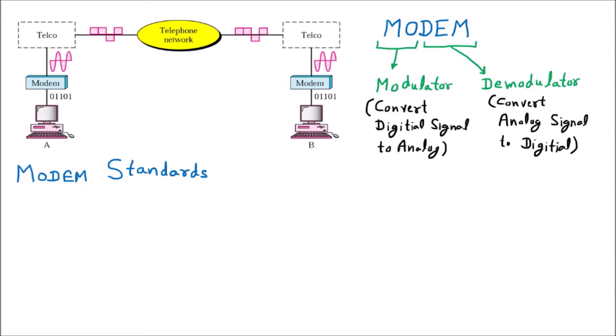The first one is the Bell modem standard. Talking about the Bell modem standard, we have different types in that. The first one is the 103/113 series — these are the names that you have to know, as we will discuss further categories of modem later. Then the next one is the 202 series.